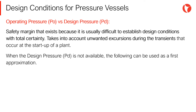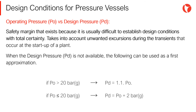If we need to design but only the operating conditions are known, a workaround could be as follows: if the operating pressure PO is higher than 20 bars, the design pressure is 1.1 times the operating pressure. Alternatively, if the operating pressure is less than 20 bars, the design pressure is the operating pressure plus 2 bars.